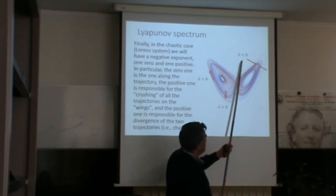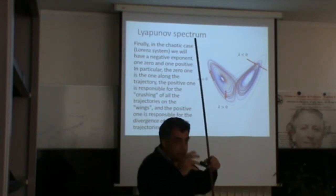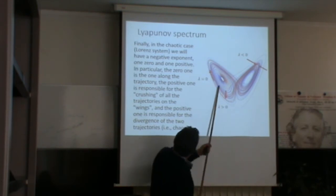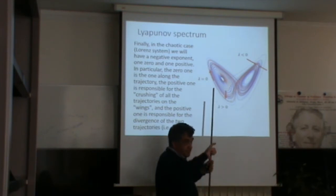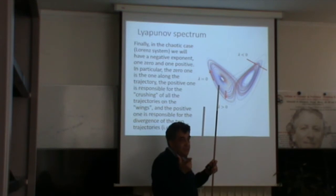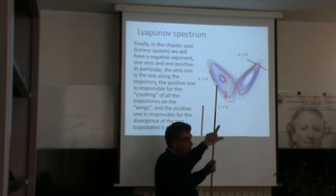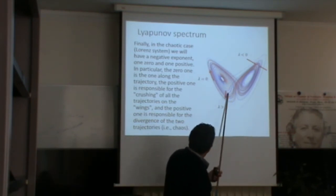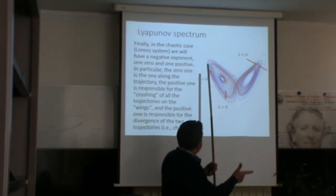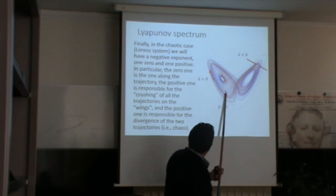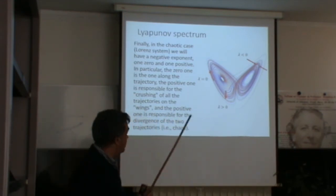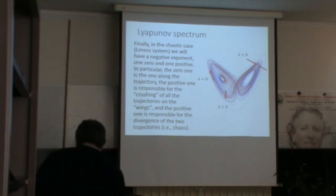If you take two initial conditions along the same trajectory, they cannot diverge because the trajectory is deterministic — you cannot have two trajectories from one point. So they remain at roughly the same distance along the attractor: there is for sure one zero Lyapunov exponent. But if you make a separation perpendicular to the trajectory, it gets amplified — because sometimes one wing is visited and sometimes the other. So for sure there is a positive Lyapunov exponent. Chaos is therefore related to the appearance of a positive Lyapunov exponent.